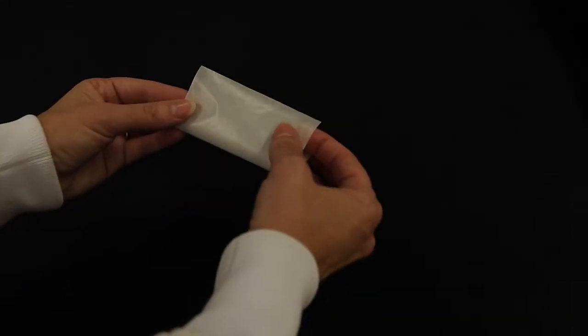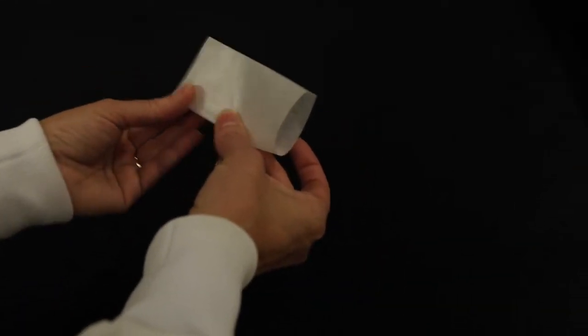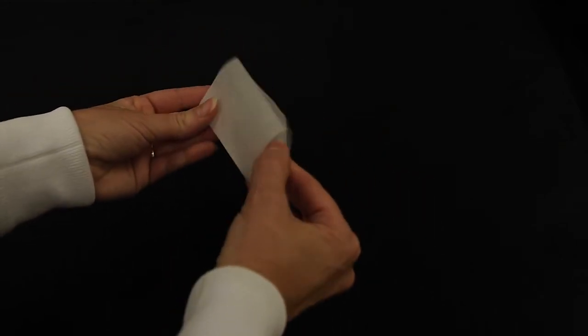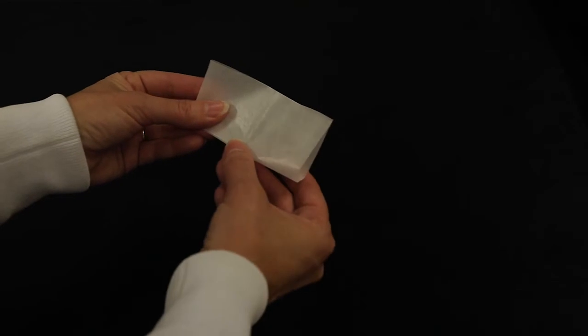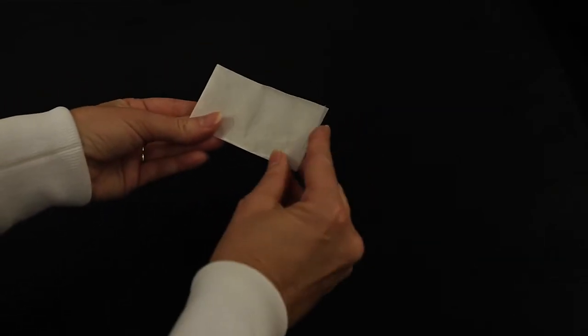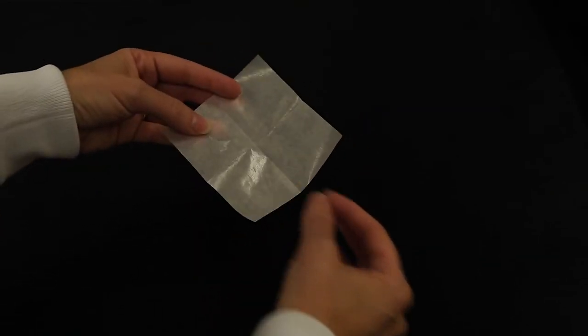Fold the weighing paper perpendicular on both sides to form a cross in the middle. This creasing will help hold the chemical on the weighing paper.